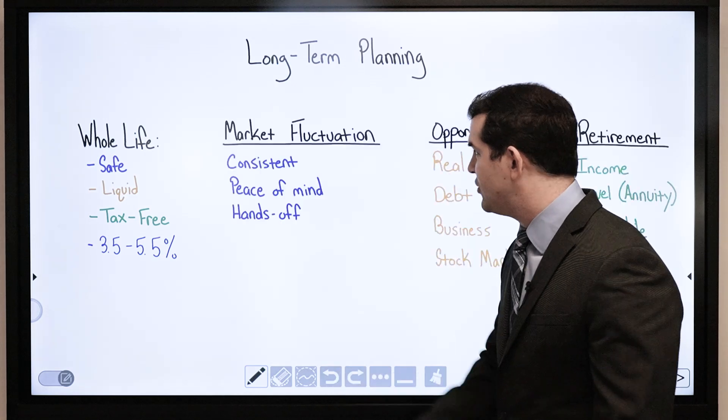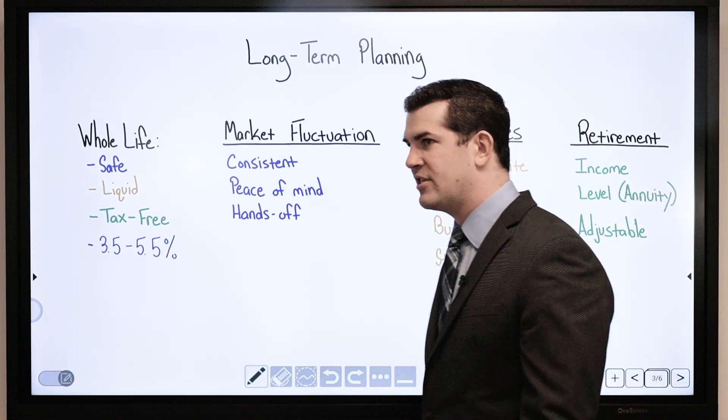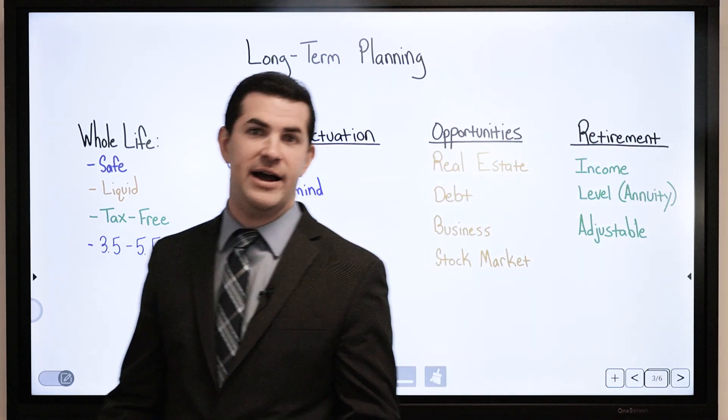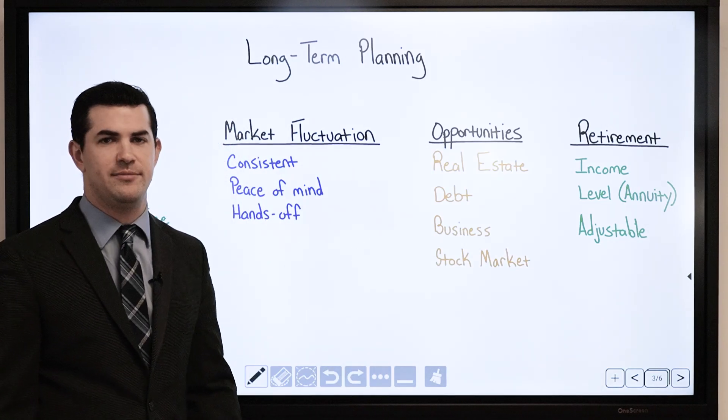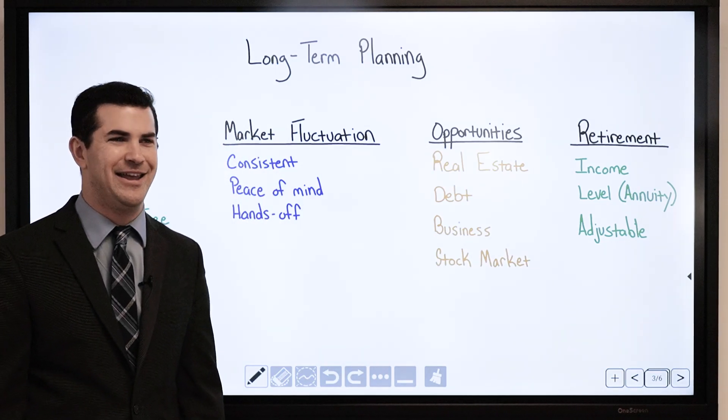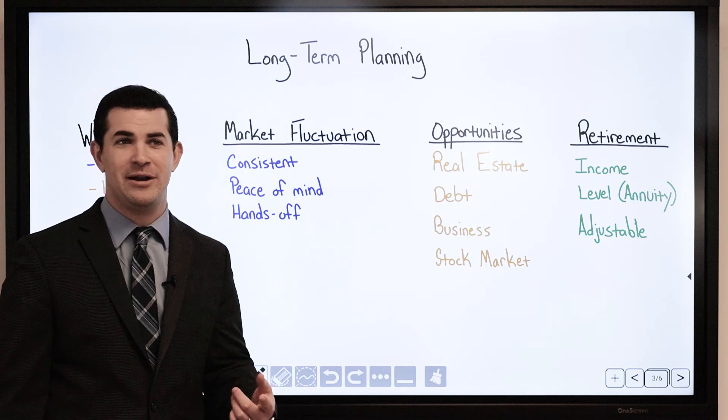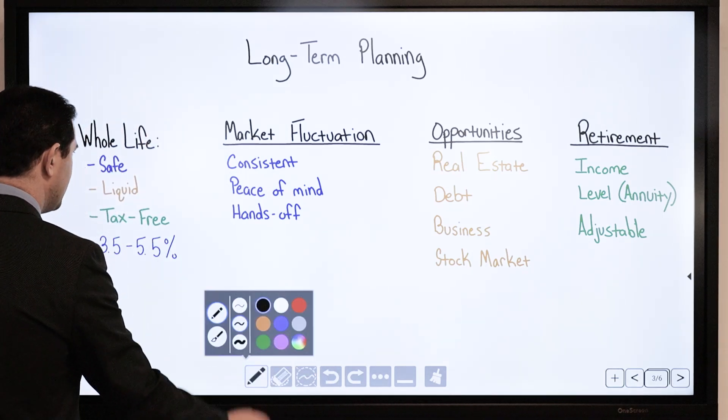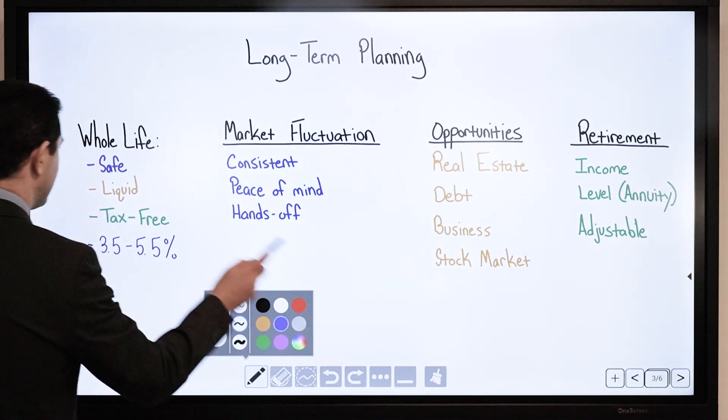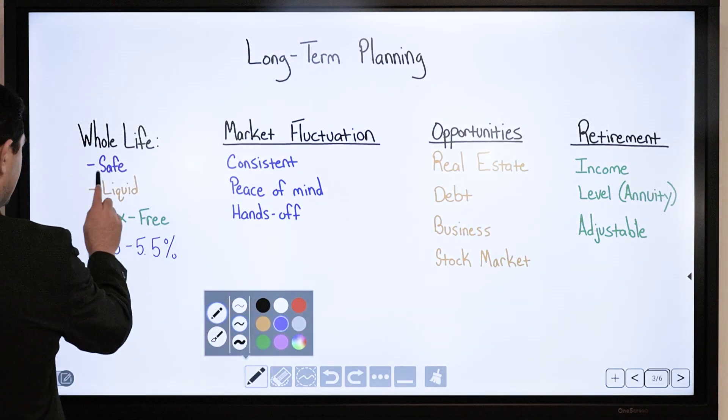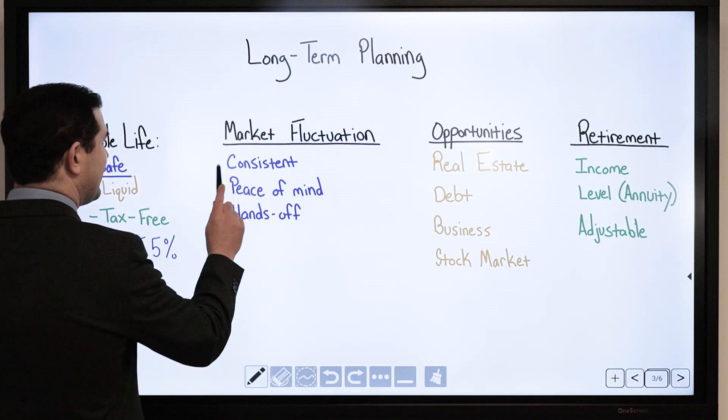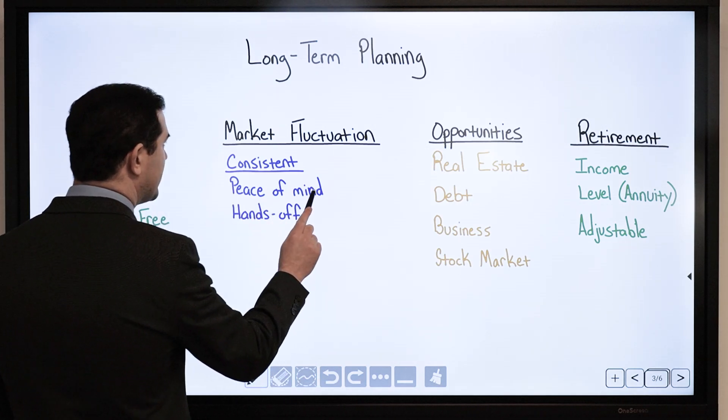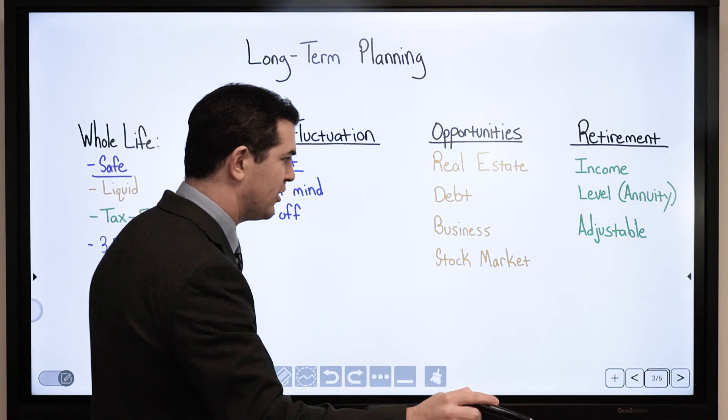Let's go through these benefits. A couple things that can pop up throughout your lifetime. Market fluctuation. Does this happen? Yes. Stock market, the economy as well, but we're going to focus on the stock market here. What do I have with a whole life insurance policy? Particularly around the safety. One, it is consistent, regardless of what happens in the market.